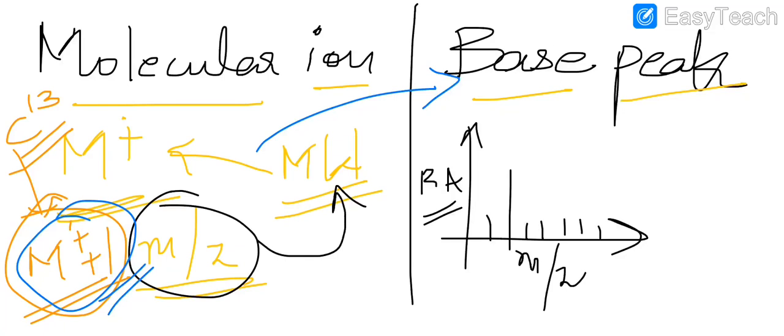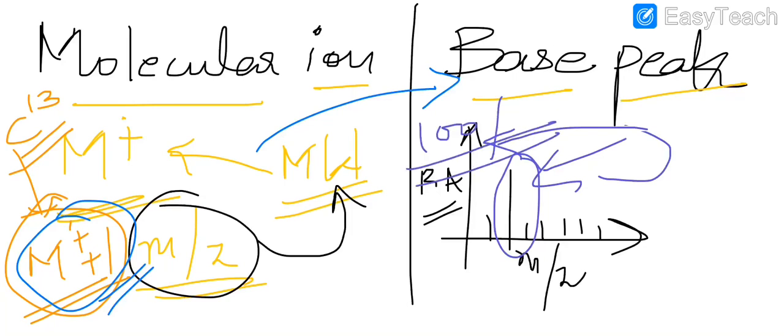And routinely you're going to come across a peak with the highest relative abundance, and this peak with the highest relative abundance is arbitrarily assigned an abundance of 100%.